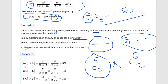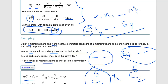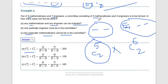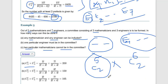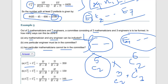Part (c): two particular mathematicians, say M1 and M2, cannot be in the committee. So we remove M1 and M2 from the mathematician pool, leaving only 3 mathematicians for 2 spots: 3C2. The engineer selection remains 7C3 = 105. So the answer is 3C2 × 7C3.